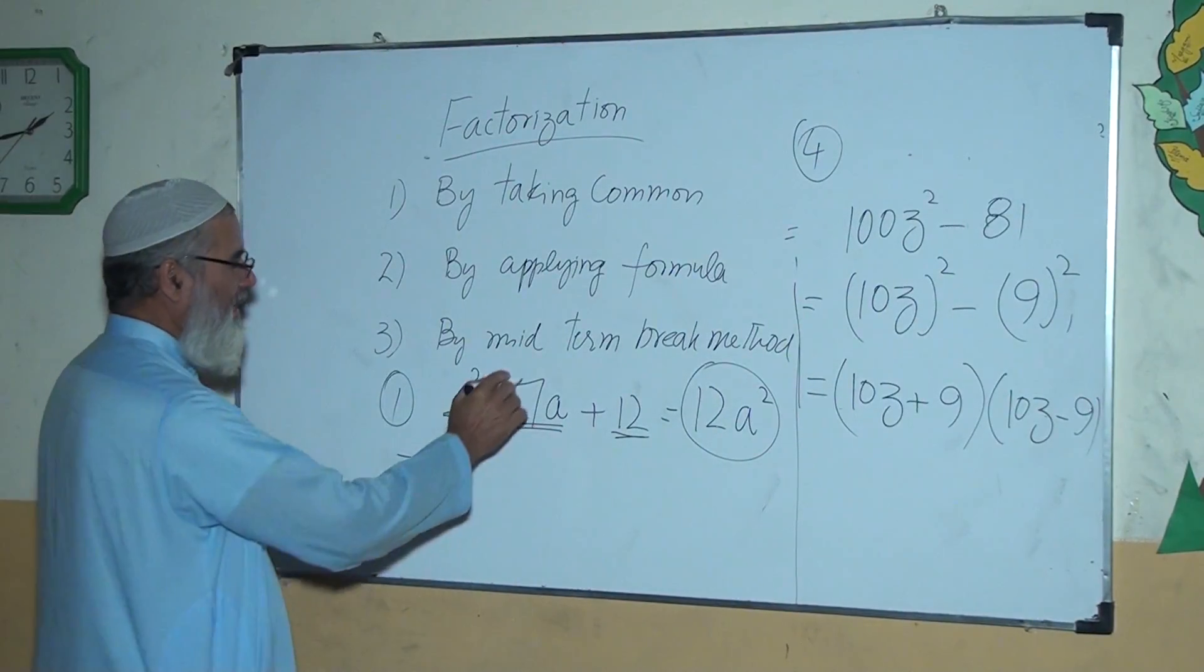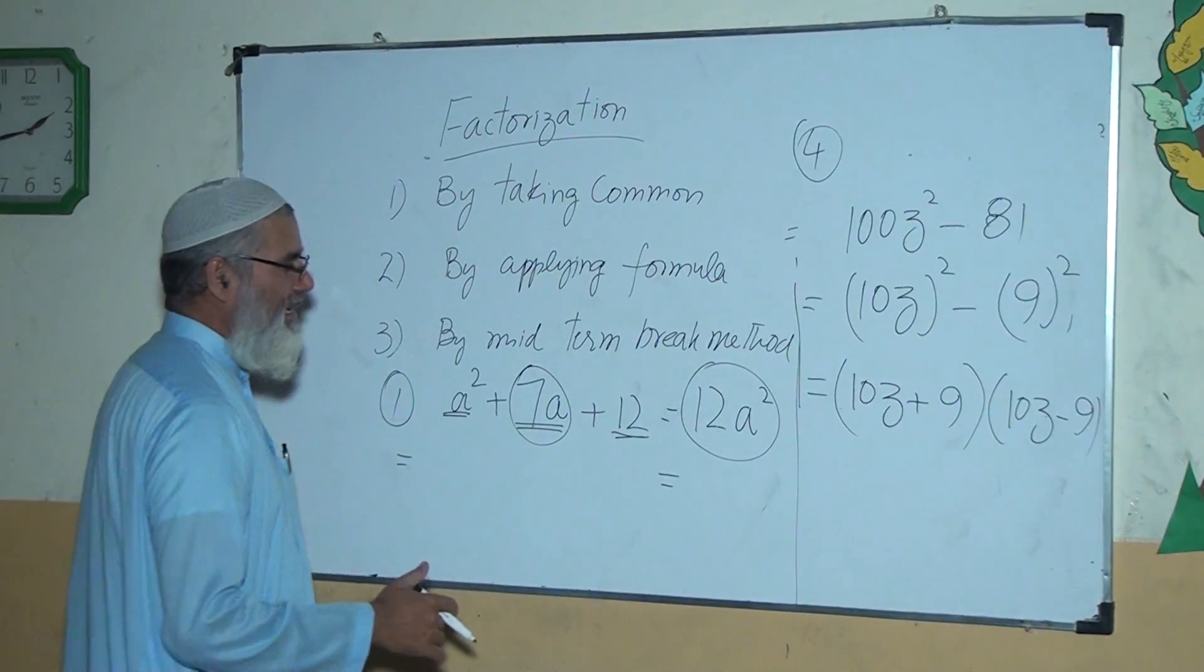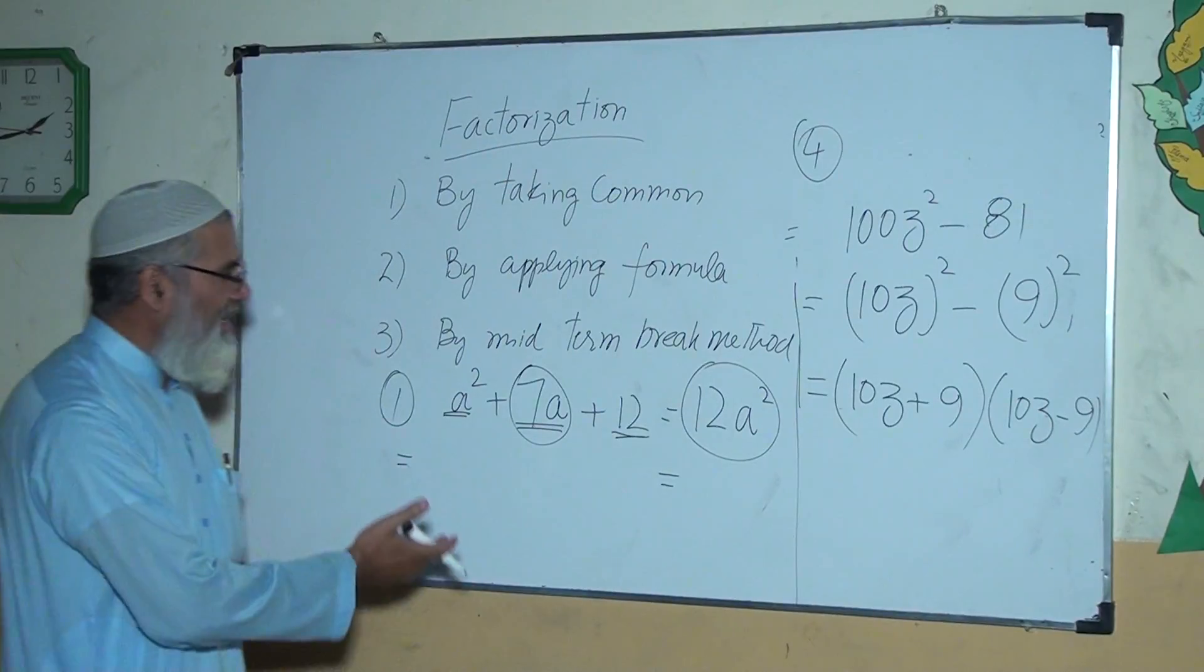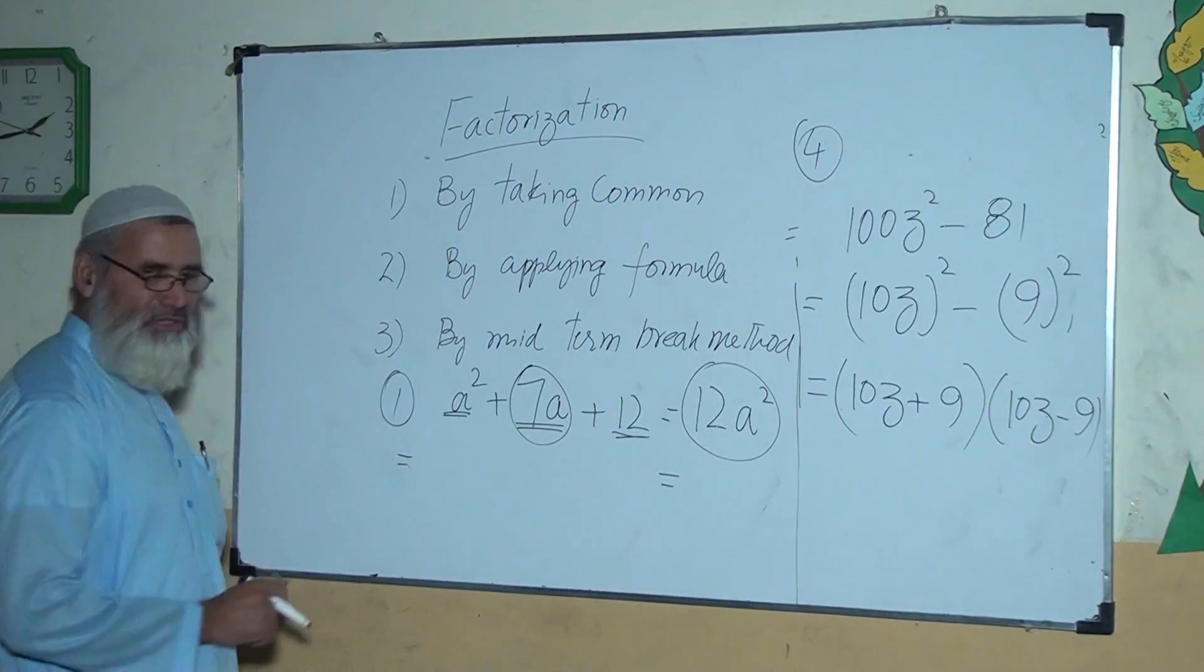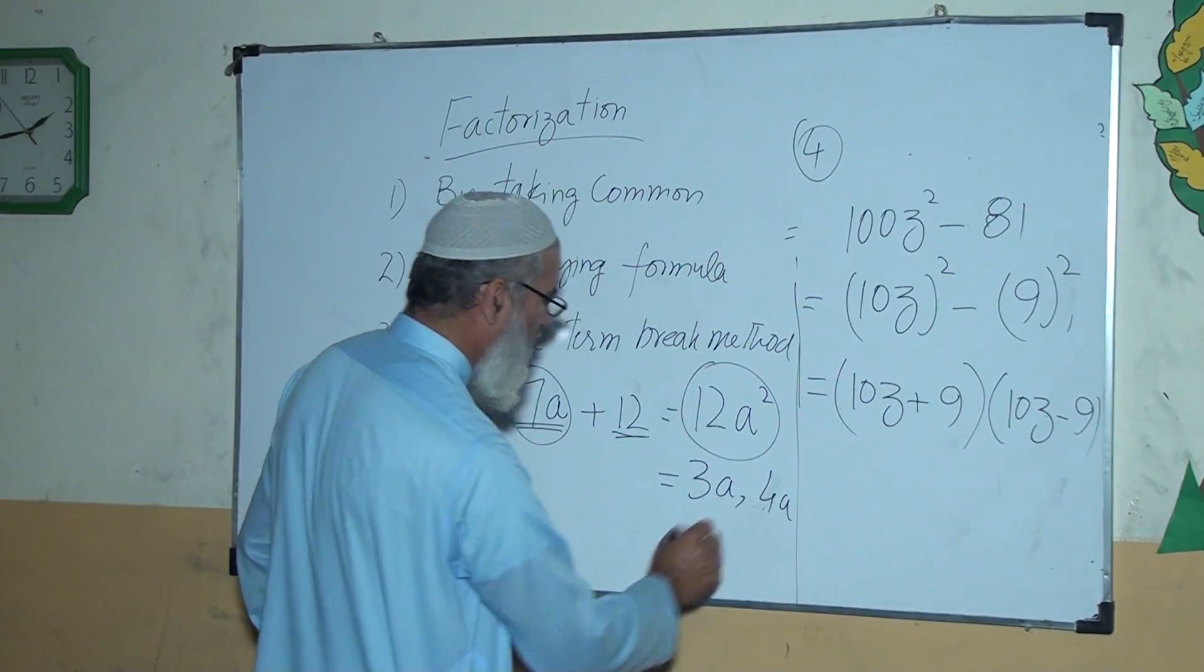And this is the middle term. I want two numbers. When I multiply these two numbers, the answer should be 12a², and the sum of these numbers should be 7a. That is 3a and 4a.